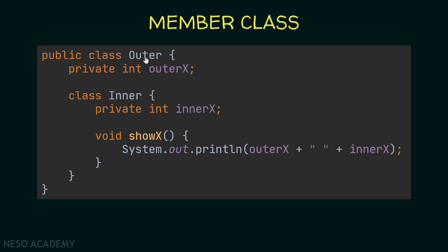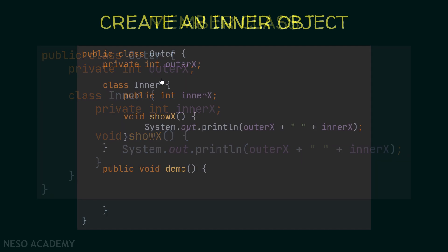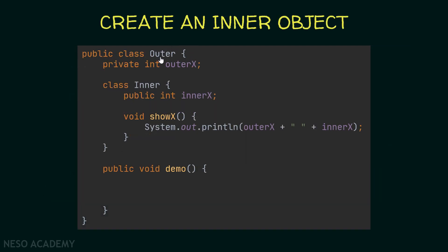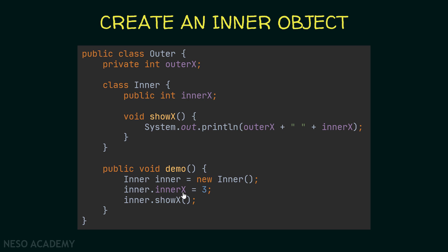Now, what if we want to create an object from the inner class inside the outer class? Suppose we create a method called demo. Inside this method, since we are working inside the outer class, we don't care about the visibility of the inner class. We create an inner object, assign innerX to equal 3, and then call the showX method.